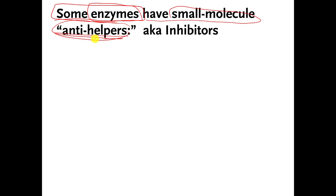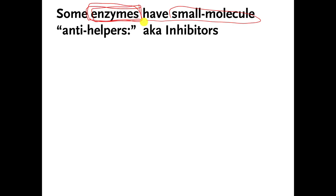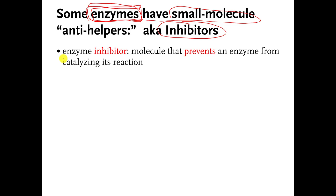I'm calling them 'anti-helpers' here, but nobody really says that. Usually a molecule that stops an enzyme from speeding up a chemical reaction is called an enzyme inhibitor. Here's the definition: a molecule that prevents an enzyme from catalyzing whatever chemical reaction it catalyzes. There are two kinds of enzyme inhibitors.